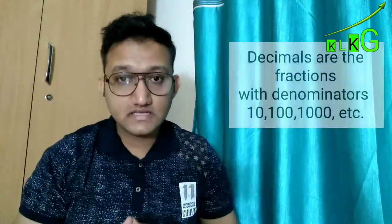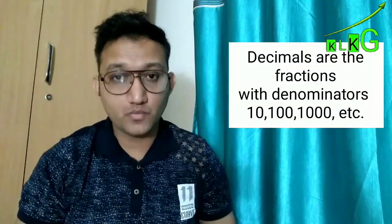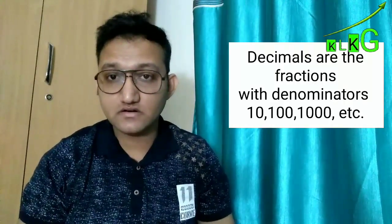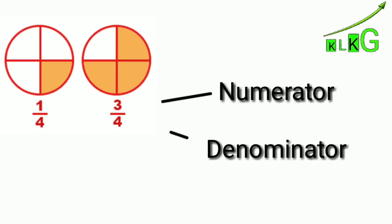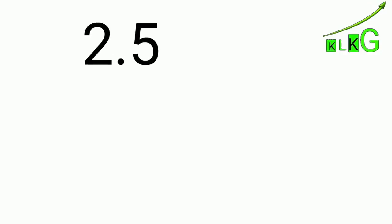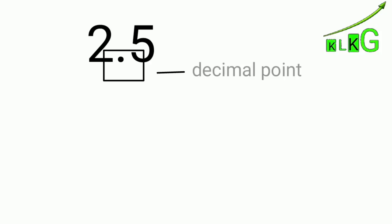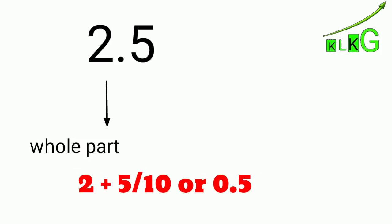Friends, numbers are all around us and it is part of our life, so it is very important to understand the types of numbers. Today we will talk about decimal numbers. Decimal numbers are fractions with the denominator ten, hundred, thousand, or so on. In fractions we use numerator and denominator to write, but in decimal numbers we do not use numerator or denominator — we use a decimal point. For example, 2.5: here 2 is the whole part and 5 shows the fractional part.